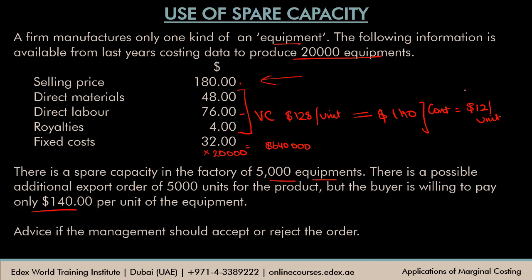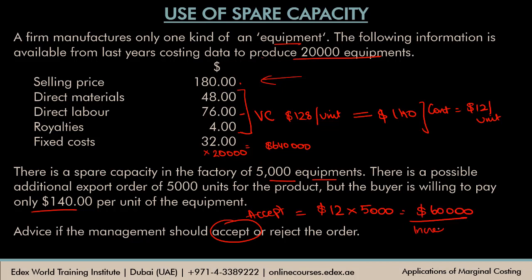Any positive contribution will lead to an increase in profits for the firm. So, the management should definitely accept the order. This will lead to a positive contribution of $12 per equipment × 5,000 equipments, giving additional contribution of $60,000, which is an increase in profit. So yes, they should accept the order — obviously keeping in mind the two non-monetary conditions mentioned earlier.